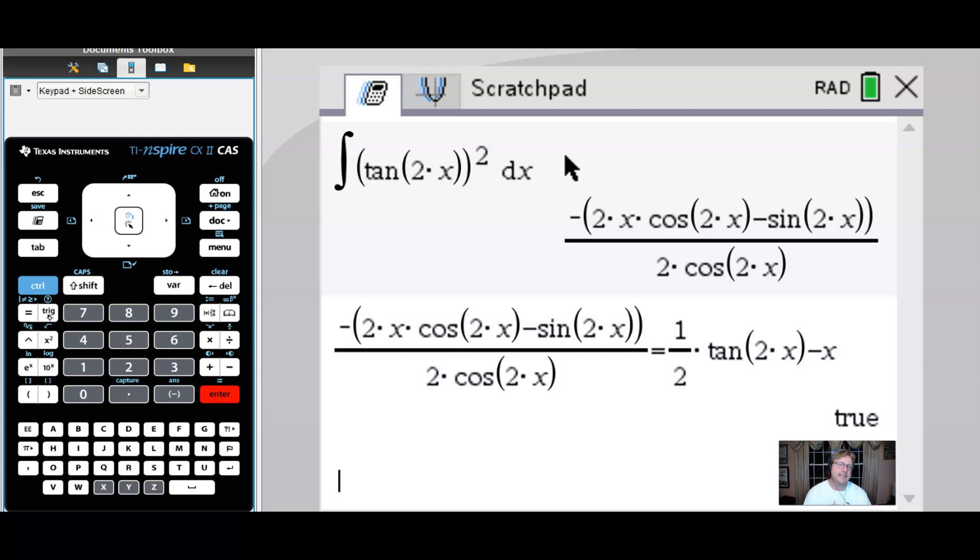Now, sometimes on the CAS calculators, the more sophisticated the expression is, the harder it is for the calculator to be able to determine the truth or false behind it. And as I've said before, we may have to graph both of those functions on a graph entry line to see if they indeed are the same curve. So for the purpose of this problem, we know that our answer is right.